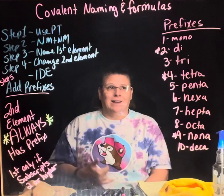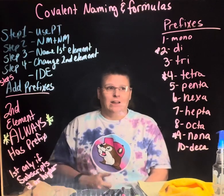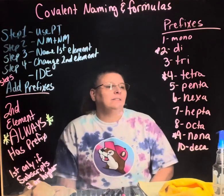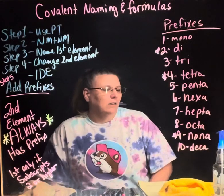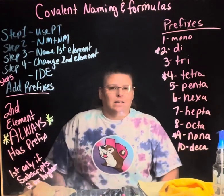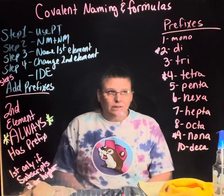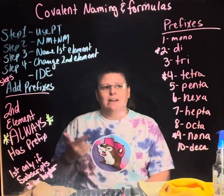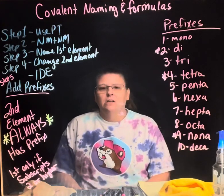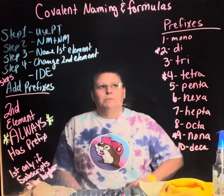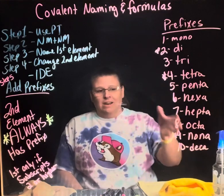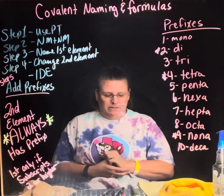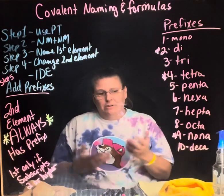The prefixes are: one is mono, two is di, three is tri, four is tetra, five is penta, hexa, hepta, octa, nona, and deca. The ones to watch out for most are di, tetra, and nona — put a star by those. You can add these to your brain dump on your periodic table so you have them at all times.